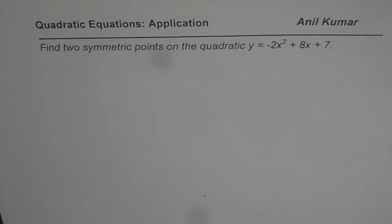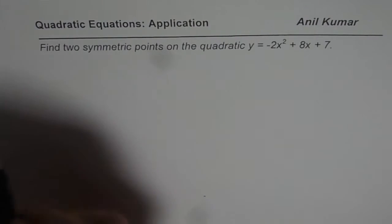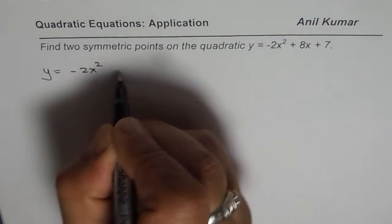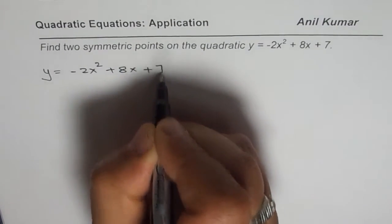The question here is, find two symmetric points on the equation y = -2x² + 8x + 7. So we are given the equation y = -2x² + 8x + 7.